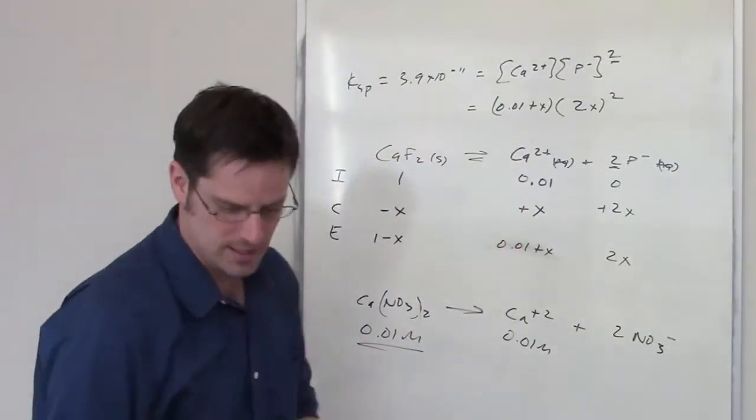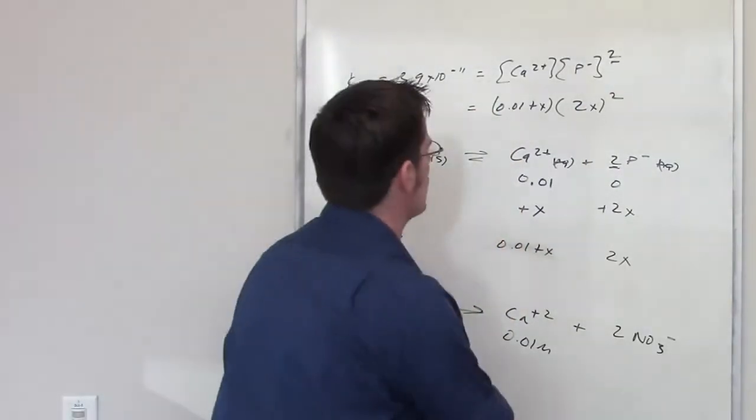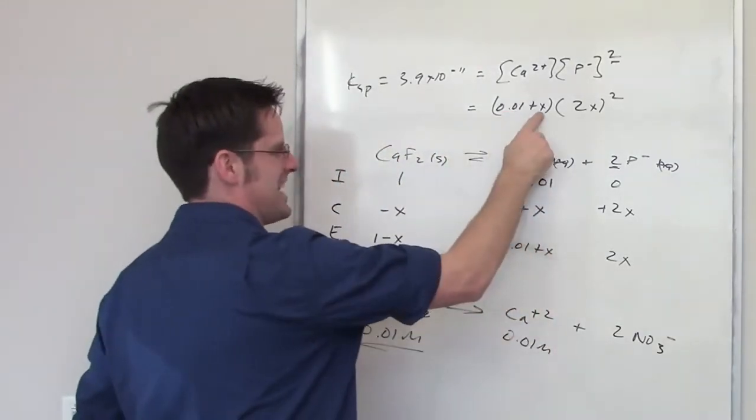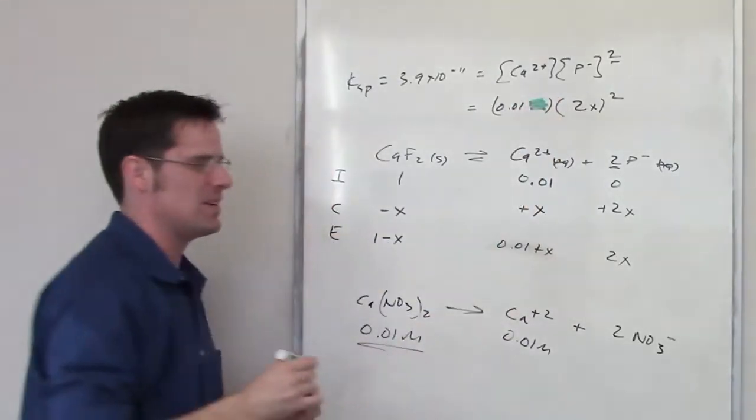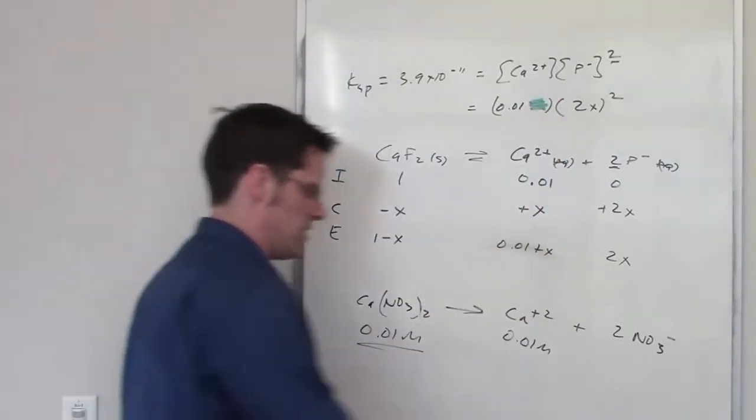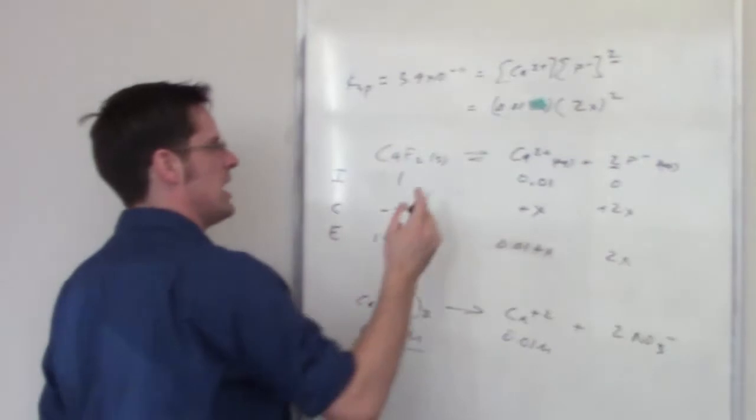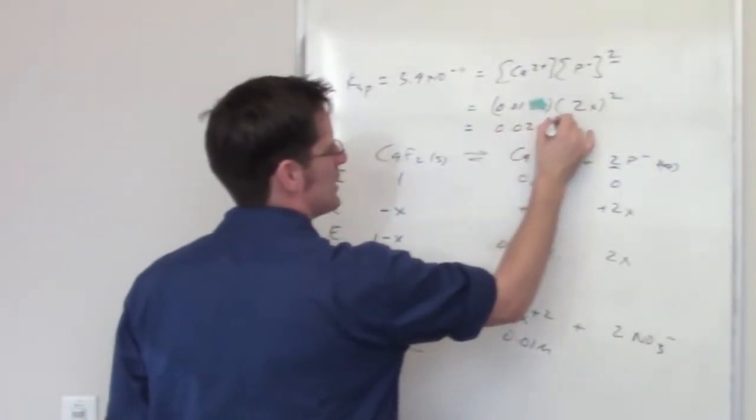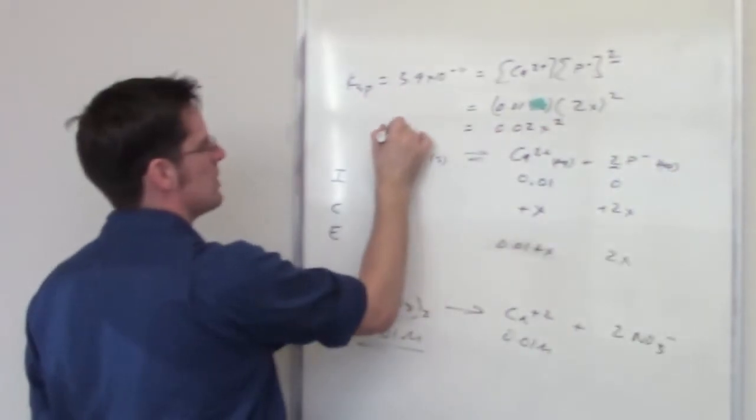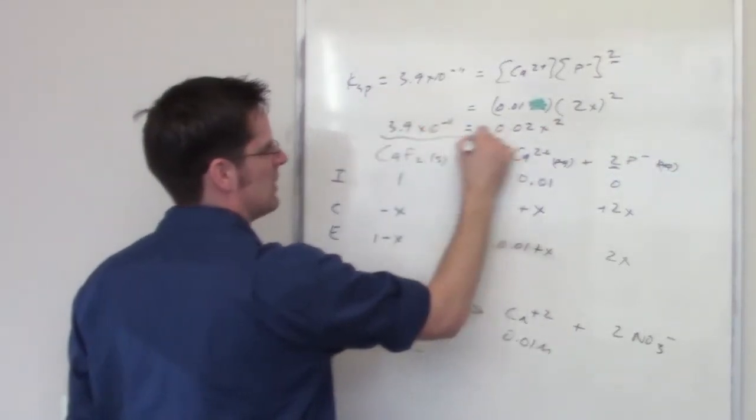0.01 is going to be so much larger than x that I can pretty much just throw out this x and pretend it doesn't even exist to simplify the math, and for all intents and purposes that'll work just fine. So this simplifies to be 0.02x squared being equal to this number, 3.9 times 10 to the negative 11th.